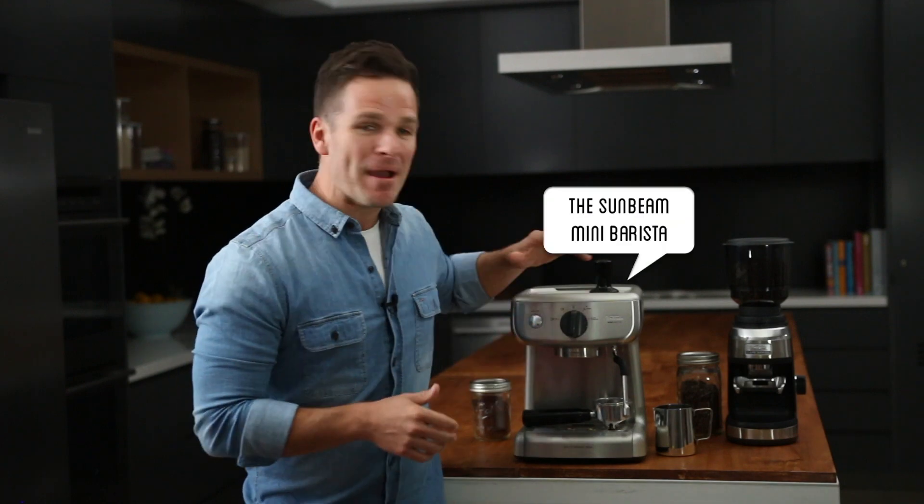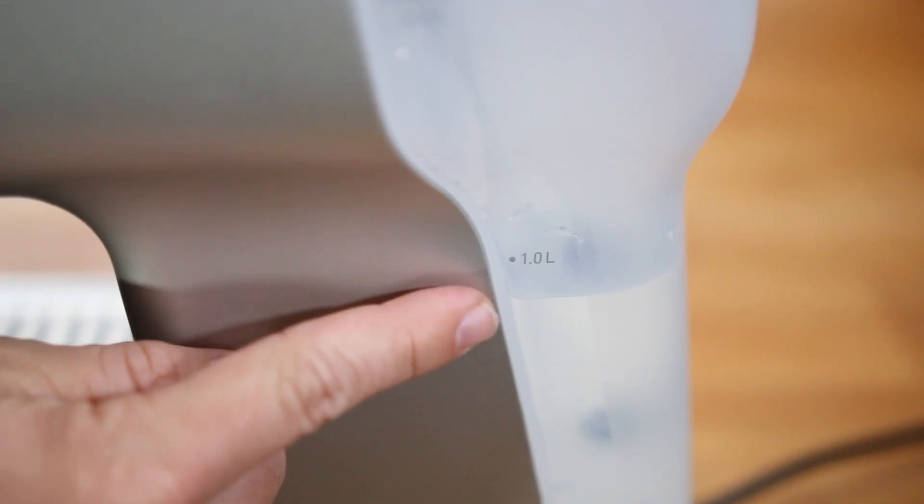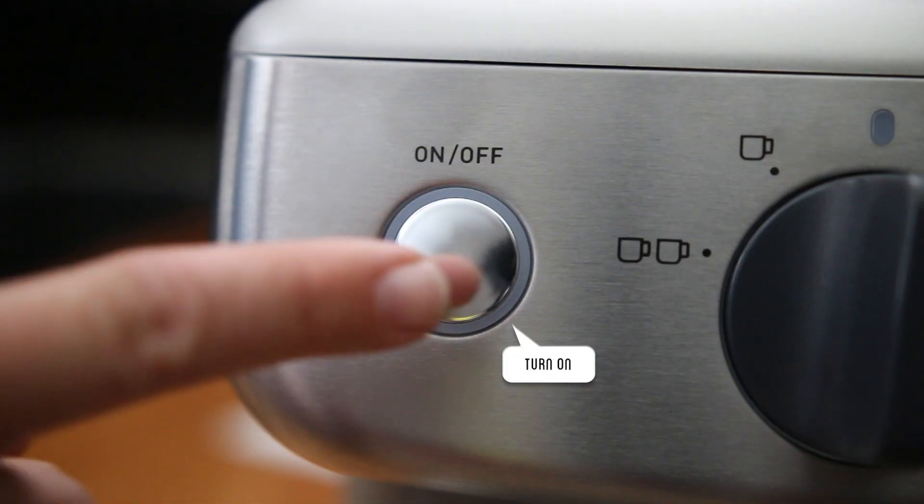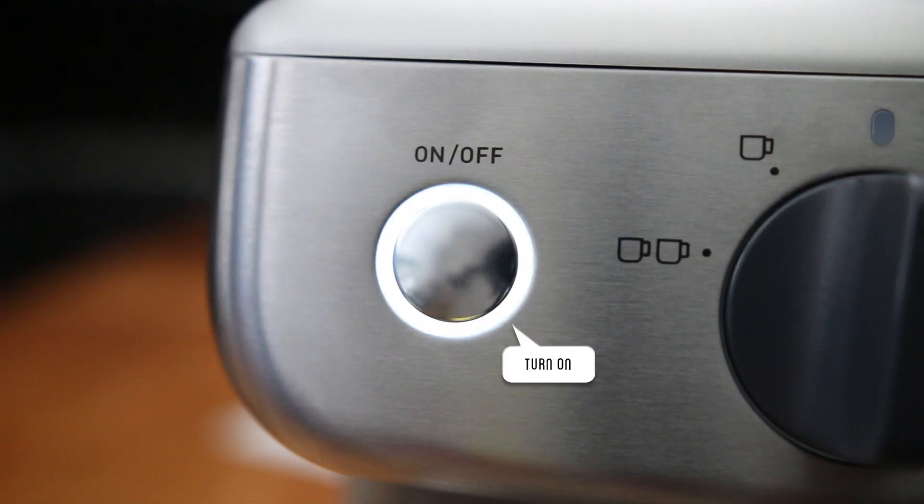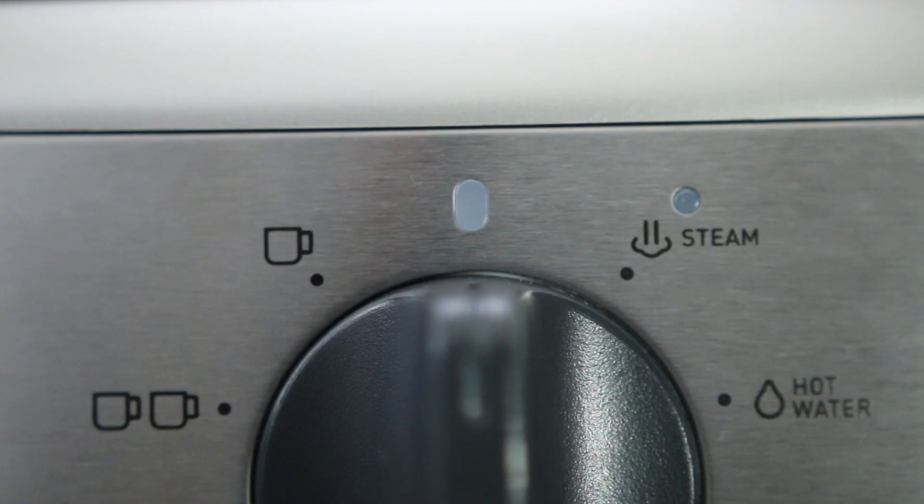Here's a quick guide to making the perfect coffee with your Sunbeam Mini Barista. Firstly we need to check the water level and then turn on. Wait about 60 seconds then the ready light will illuminate. Now we're good to go.